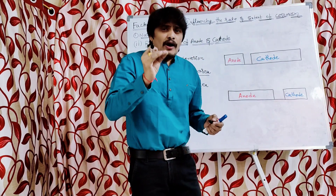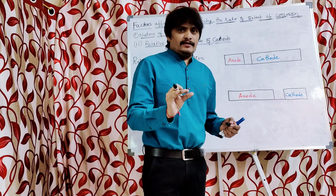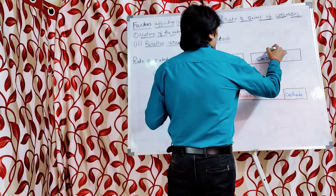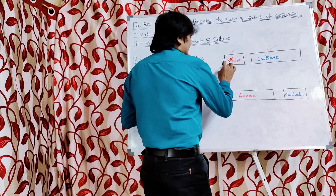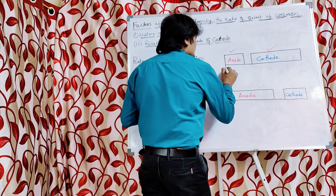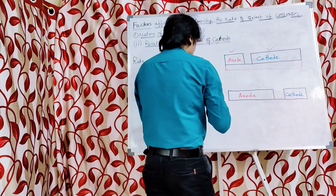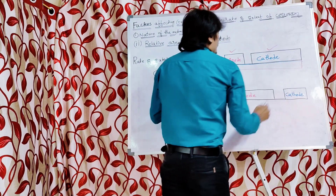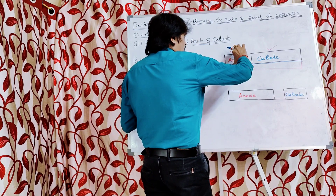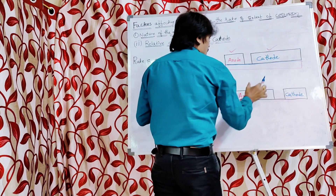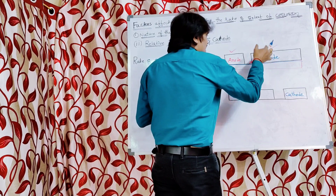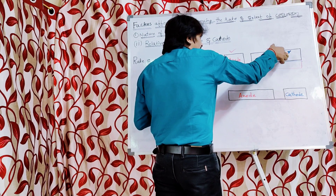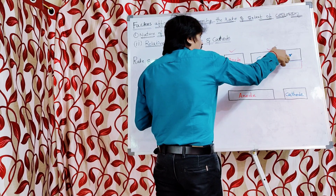Now in order to understand this clearly, I will explain with this illustration. Here this is the metal surface. The anodic area is small whereas the cathodic area is big or large. Since the cathodic area is large, it will undergo more reduction, which is gain of electrons. As the cathodic area is more, it should gain more and more electrons.